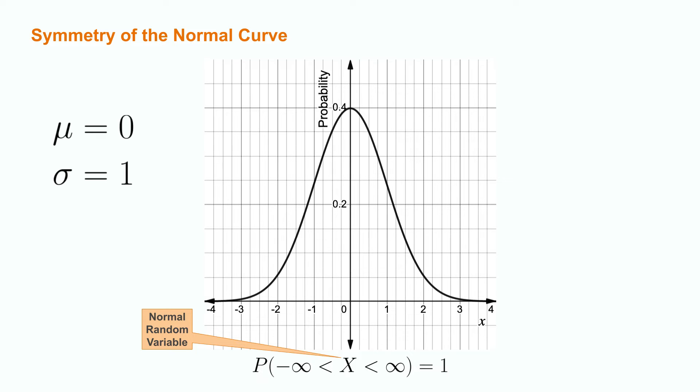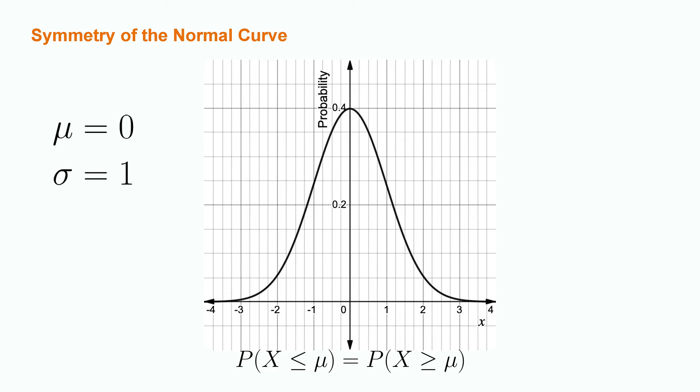It can take on any value from negative infinity to positive infinity, and thus we should note that the probability of negative infinity less than the random variable X less than infinity is going to equal one. As mentioned before, one of the key characteristics of the normal curve is that it is symmetric around the mean mu. That means that the function has the same shape to the left and right of whatever the mean parameter is. Pause the video for a moment to see if this can tell us anything about the probability of seeing an observation either less than or greater than the mean is.